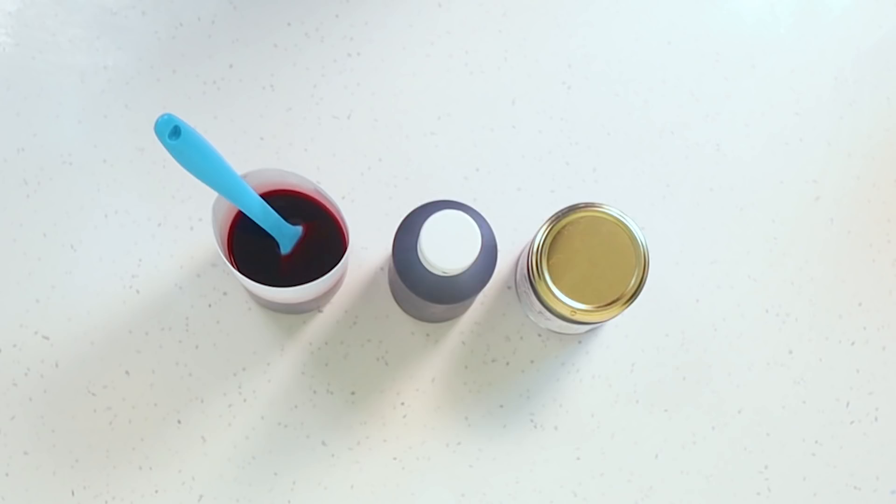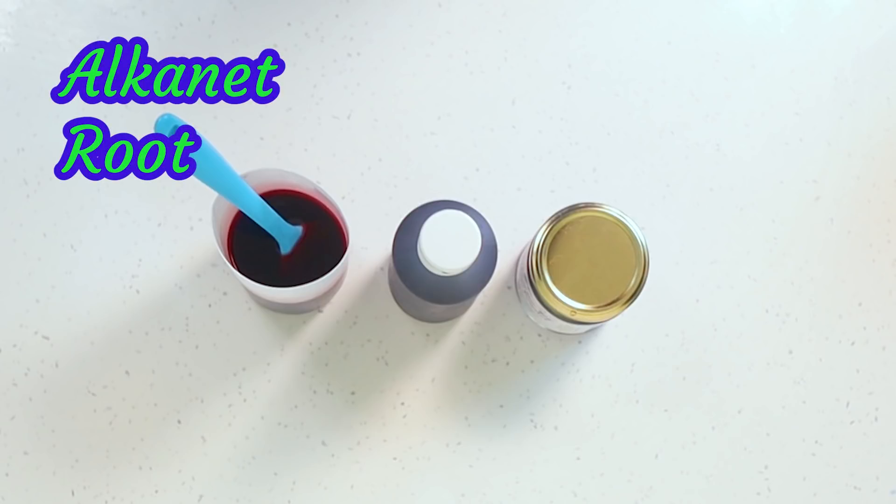The first thing I'm going to be using as a colorant is some alkanet root. Now my alkanet root I've done as an oil infusion and I've had it infusing for about six months. You can do a hot infusion and that makes it infuse a lot quicker. I'm going to leave a link to a video where I've talked a little bit more about infusions if you want to find out more detail.